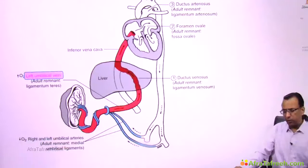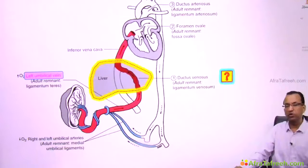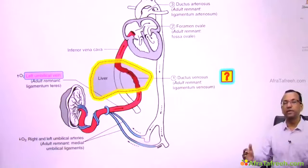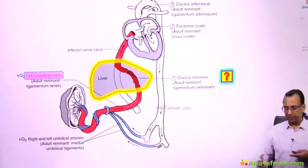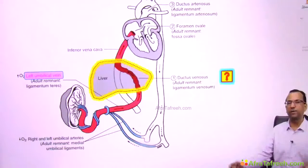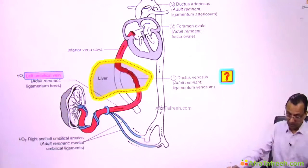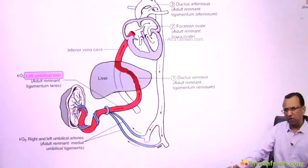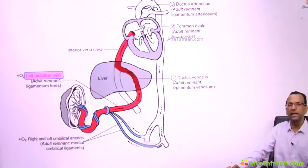This blood is going towards the liver — but do you give it to the liver? No, you have to bypass the liver. The liver is immature in the baby, so you don't want much oxygen going there. To bypass the liver, there is a channel called the ductus venosus.